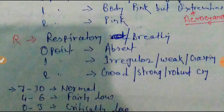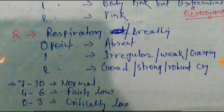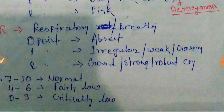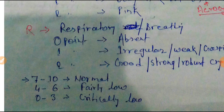R stands for Respiration or breathing — note this is not the respiration rate. 0 points indicates absent, 1 point indicates irregular, weak, or gasping respiration, and 2 points indicates a good, strong, robust cry. The main scores are: 7 to 10 is normal, 4 to 6 is fairly low, and 0 to 3 is critically low or dead.